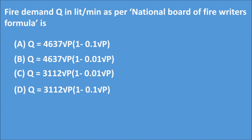The correct answer is Option B. Fire demand Q in litres per minute as per the National Board of Firewriters formula is Q = 4637√P × (1 − 0.01√P).